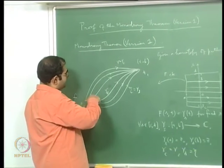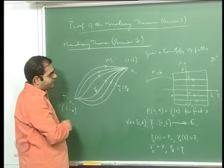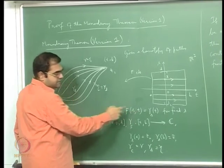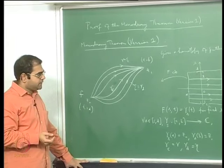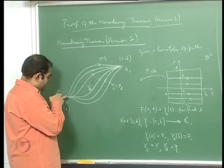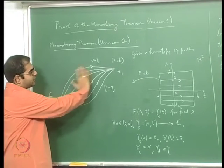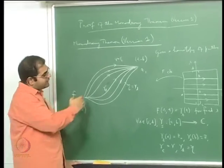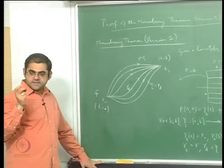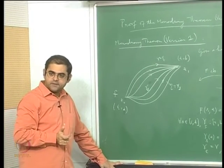Any intermediate path in the homotopy is given by gamma_s. Gamma_s is just F(s, t) with s fixed and t varying. What we need to show is that if we know there is an analytic function at the point z_0 which can be analytically continued along each of these paths, then analytic continuation along any path will again lead to the same function at the terminal point z_1. That is what we have to prove — that is the monodromy theorem.